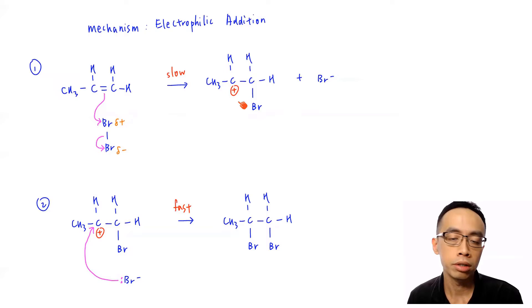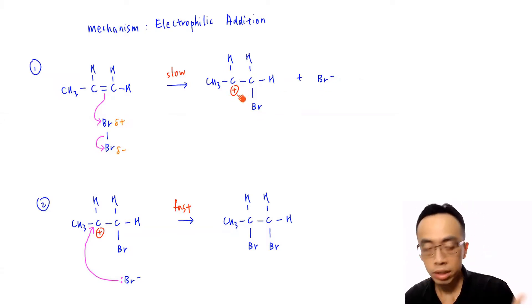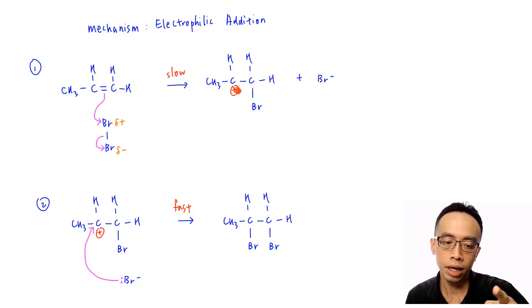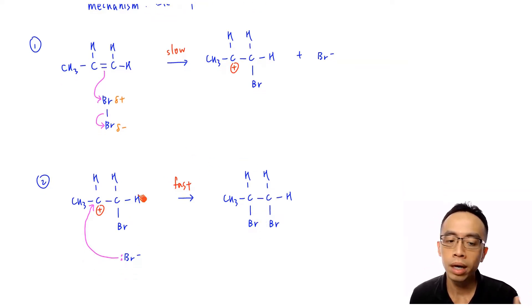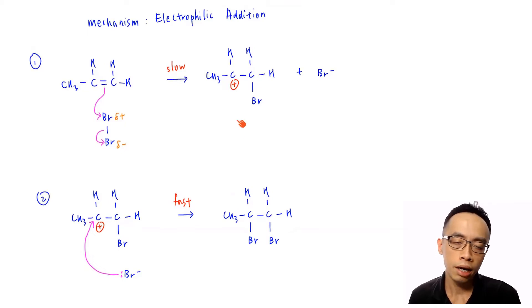And this step, it is a slow step. Then the next thing is your C plus is positively charged obviously. Br minus is negatively charged. Then this Br minus will attack the C plus and join to the C plus to form your carbon bromine bond which is in the second step. This will be the first step. And this is our electrophilic addition mechanism.